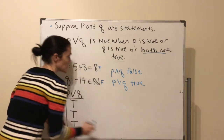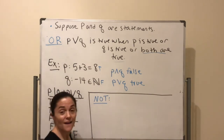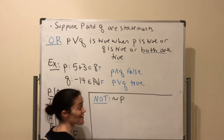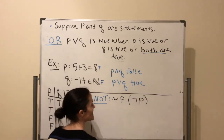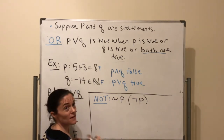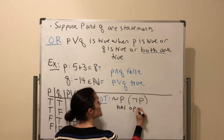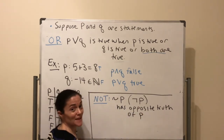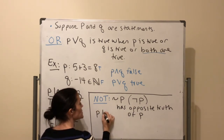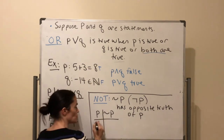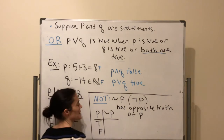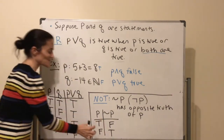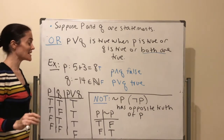The NOT connective takes only one statement. Written ¬p (or with an overline in the text), it simply has the opposite truth value of p. If p is true, ¬p is false; if p is false, ¬p is true. The truth table has only two rows since there's just one input.